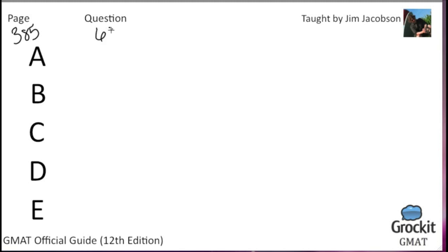Question number 69: it can be inferred from the passage that the author believes which of the following about the complaint mentioned in the last paragraph. The author mentions that it was a brazen case, and brazen means bold or outrageous — it has a negative connotation. It's not just bold in a brave sense; brazen can mean contrary to what people think somebody ought to do, daring to the point of infringing on the expectations or rights of others.